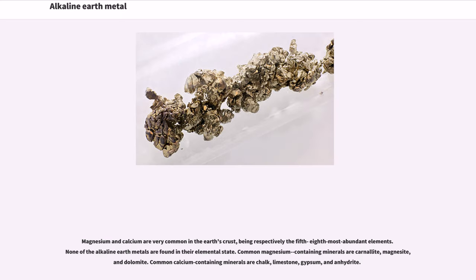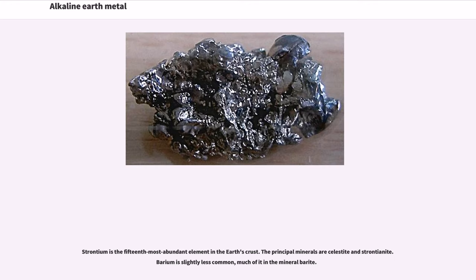Magnesium and calcium are very common in the Earth's crust, being respectively the 5th and 8th most abundant elements. None of the alkaline earth metals are found in their elemental state. Common magnesium-containing minerals are carnallite, magnesite, and dolomite. Common calcium-containing minerals are chalk, limestone, gypsum, and anhydrite. Strontium is the 15th most abundant element in the Earth's crust; the principal minerals are celestite and strontianite. Barium is slightly less common, much of it in the mineral barite.